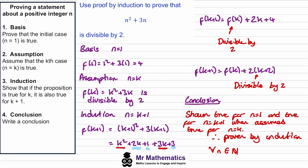Now we write our conclusion. We've shown this is true for n equals one, and it is true when n equals k plus one when assumed true for n equals k. Therefore it is proven true by induction for all values of n that are elements of the set of natural numbers.